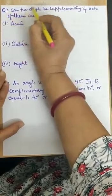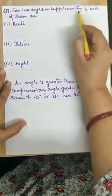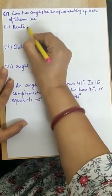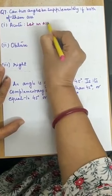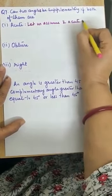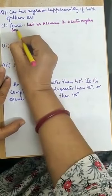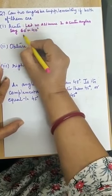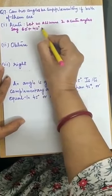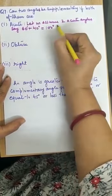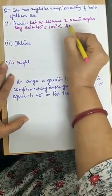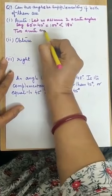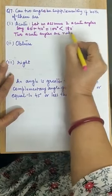Coming to the seventh question: can two angles be supplementary if both of them are acute? This is the first part. Let us assume two acute angles, say 60 degrees and 40 degrees. If you find their sum, it comes to 100 degrees, which is less than 180 degrees. So we say that two acute angles are not supplementary.